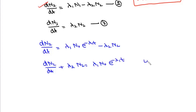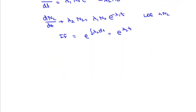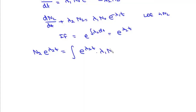This is a linear differential equation in N2, so we find its integrating factor, which is e to the power of the integral of λ2·dT, giving e to the power λ2·T. The solution is then N2·e to the power λ2·T equals the integral of e to the power λ2·T multiplied by λ1·N0·e to the power minus λ1·T, dT.